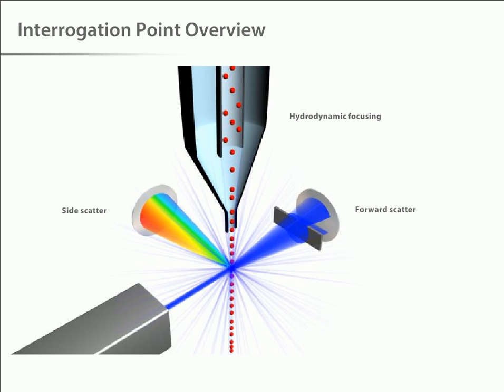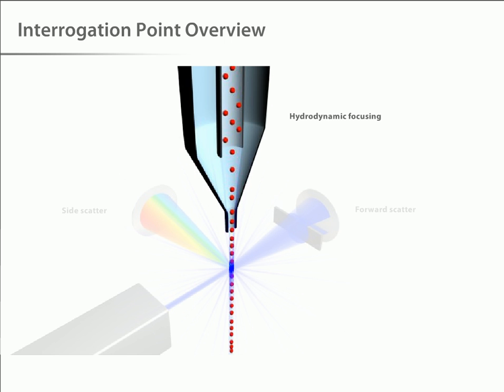The interrogation point is the heart of the system. This is where the laser and the sample intersect, and the optics collect the resulting scatter and fluorescence. First, let's talk about how the sample is delivered to the laser.